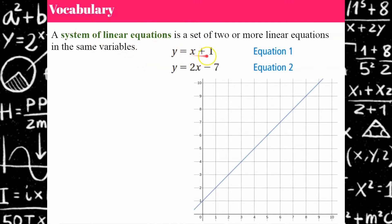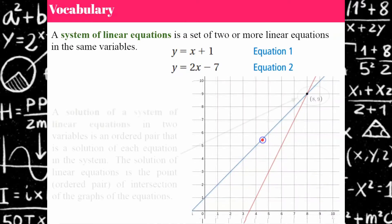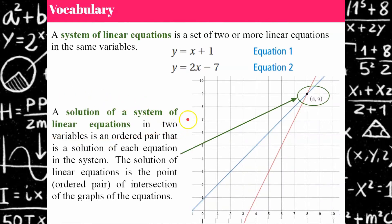So how you would solve this is: you're going to graph equation 1, graph equation 2, and you're going to see a point of intersection — and that's our second vocabulary word. The solution of a system of linear equations is this point of intersection. When you have a solution to a system of linear equations in two variables, it is an ordered pair that is true for each equation. The solution is the point, or ordered pair, of the intersection of the graphs.